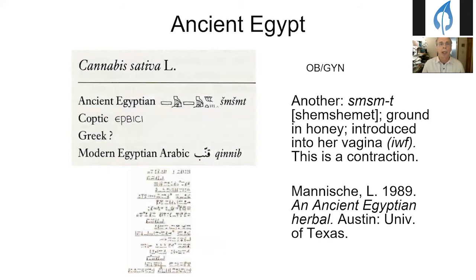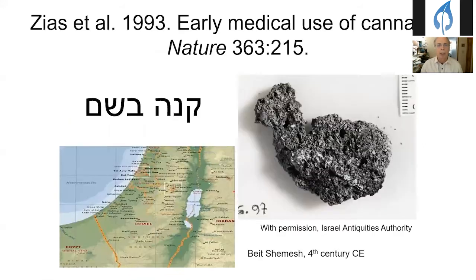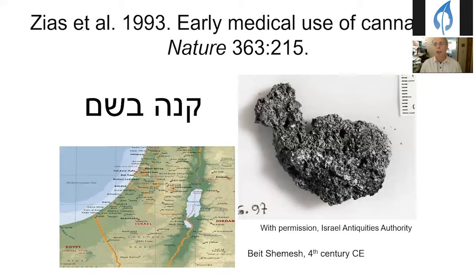Jumping back to ancient Egypt, this is about Shem Shema — ground honey introduced into the vagina — and in China there is a reference to a contraction. It is strongly suggested that cannabis was used as an aid to childbirth. Nearby in Judea, in the 4th century, in what is now Beit Shemesh, a carbonized fragment of cannabis was found and analyzed to confirm it was cannabis. It was found next to the skeleton of a 14-year-old girl who apparently died in childbirth — an unsuccessful treatment. It was surmised the cannabis had been burned and inhaled in an effort to aid her delivery.